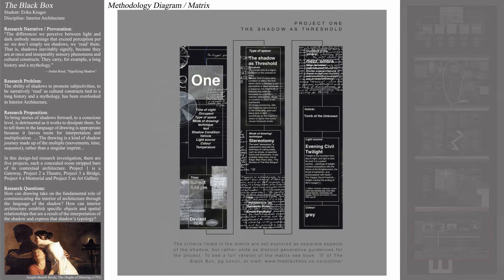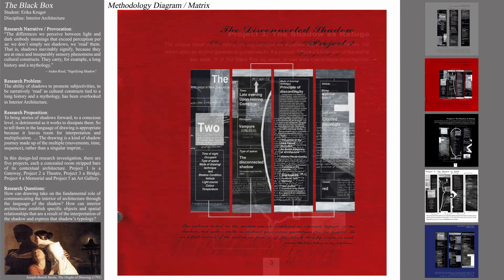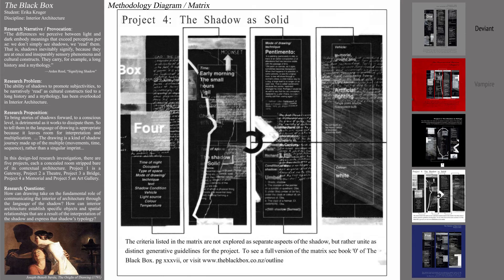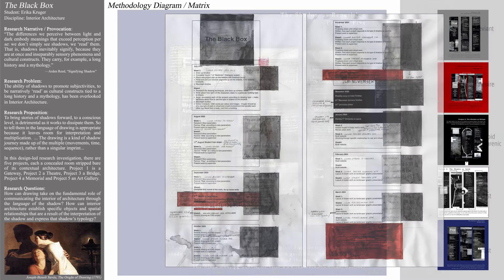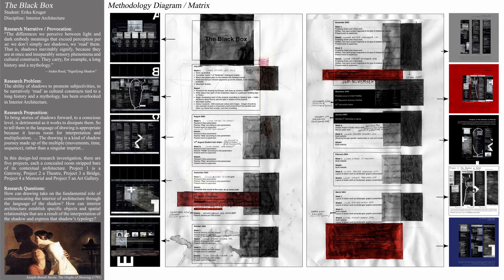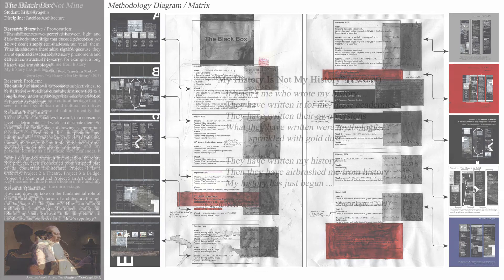In the third phase of the investigation, Erica developed five additional methodology diagrams, one for each fictional inhabitant of her five fictional interior settings: the deviant, the vampire, the paranoid schizophrenic, the ghost, and the artist. These ten diagrams together provided a clear sequential methodology pathway for a multi-layered narrative research investigation, enabling Erica to explore the shadow anthropomorphically as a living inhabitant of interior architecture.